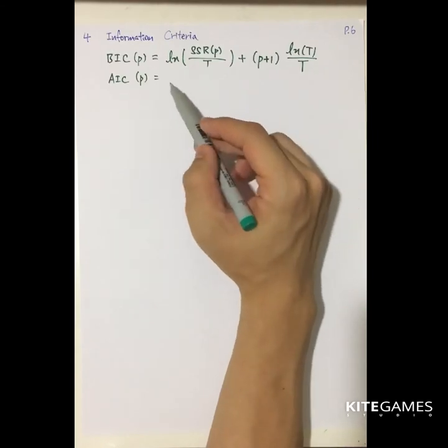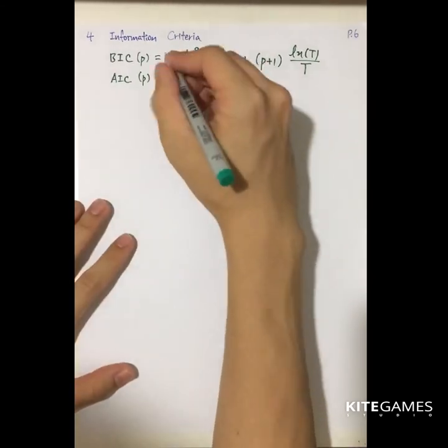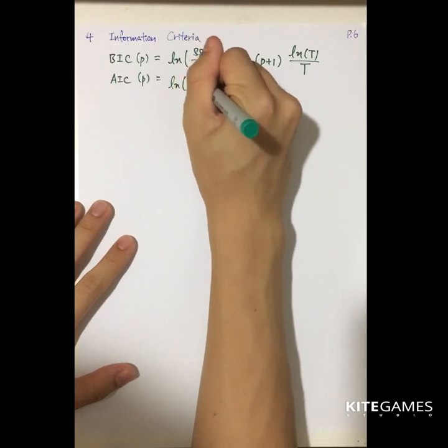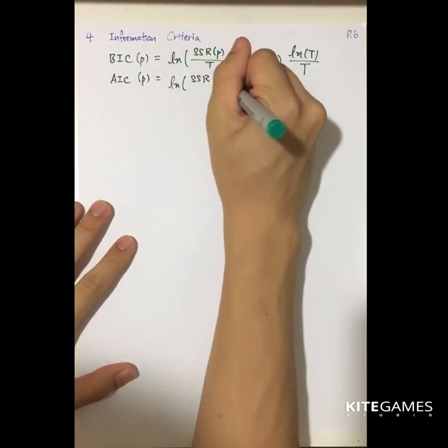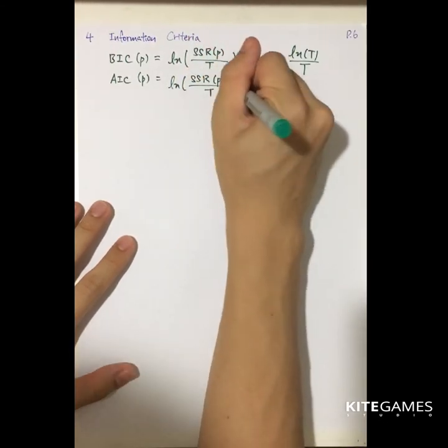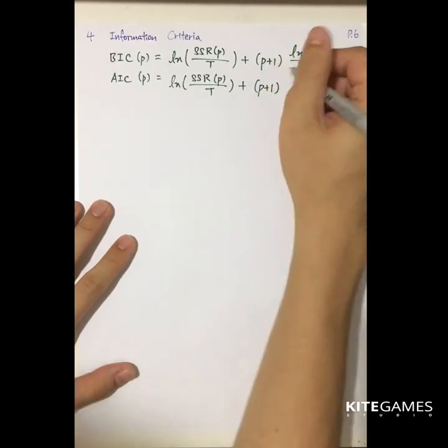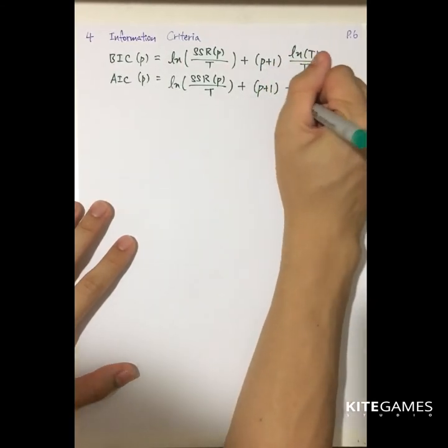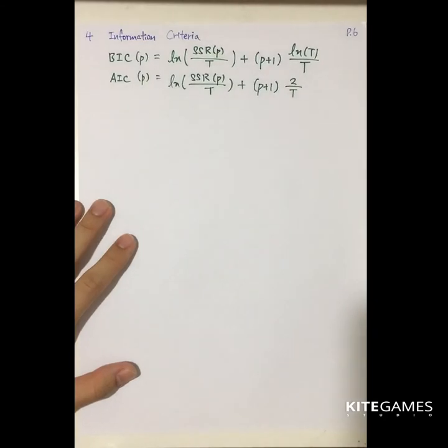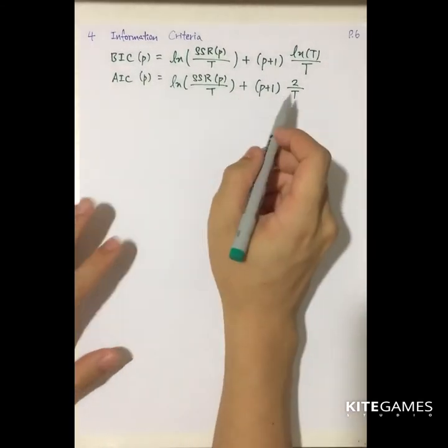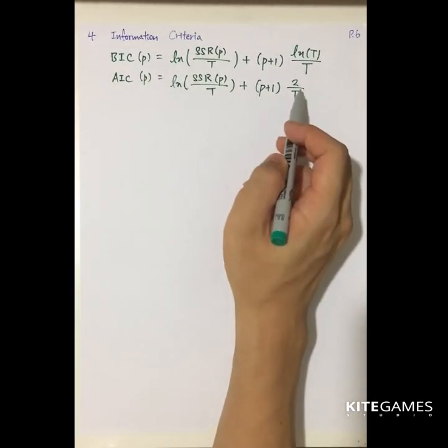Apart from the BIC, you can also choose the AIC. AIC will be given by the log SSR as a function of P divided by T plus P plus one times two divided by T. So the difference between AIC and BIC is that AIC will be faces log T by T.